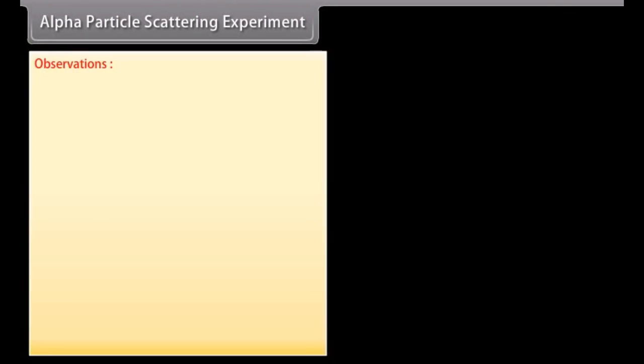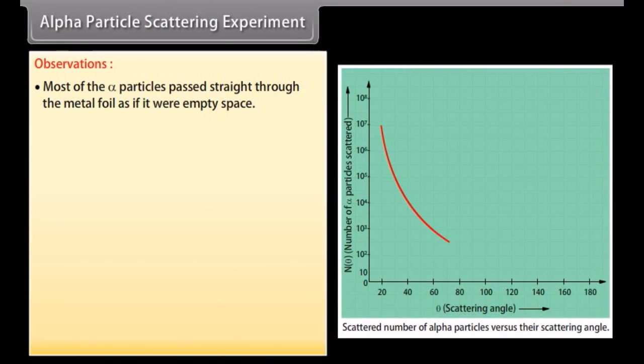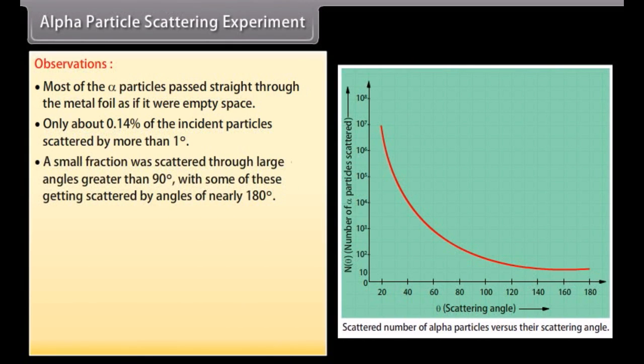Observations: Most of the alpha particles passed straight through the metal foil as if it were empty space. Only about 0.14% of the incident particles scattered by more than 1 degree. Small fractions were scattered through large angles greater than 90 degree with some of these getting scattered by angles of nearly 180 degree.